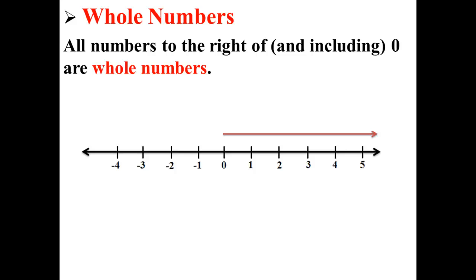Whole numbers are all numbers to the right of 0 but also including 0. So 0, 1, 2, 3, 4, 5, 6, 7, on and on. Those are whole numbers. So natural numbers don't include the 0 while whole numbers do.